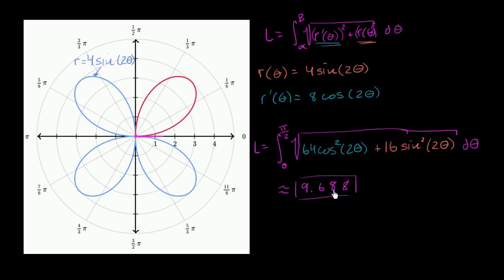Let's see if that makes intuitive sense. The curve goes as far as four away from the origin, so if you just went out to four and then back down, that would be about eight. But of course we've actually traveled along a curve that extends outward, so it makes intuitive sense that this arc length would be 9.688. Anyway, hopefully you enjoyed that.